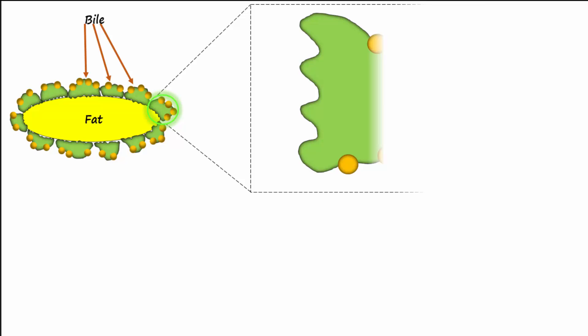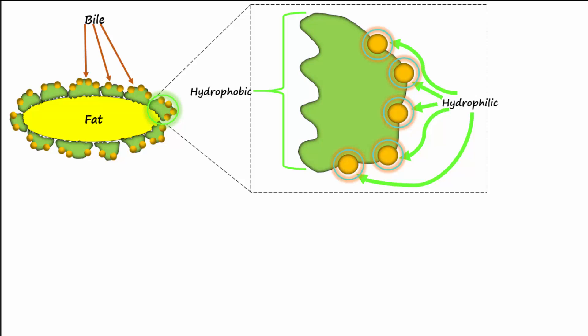Zooming in on the bile salts, we note that the bile is made up of a hydrophobic portion that will associate with the fat to be digested and a hydrophilic portion which associates with the surrounding aqueous fluid of the digestive tract. Molecules with both hydrophobic and hydrophilic regions are known as amphipathic molecules.